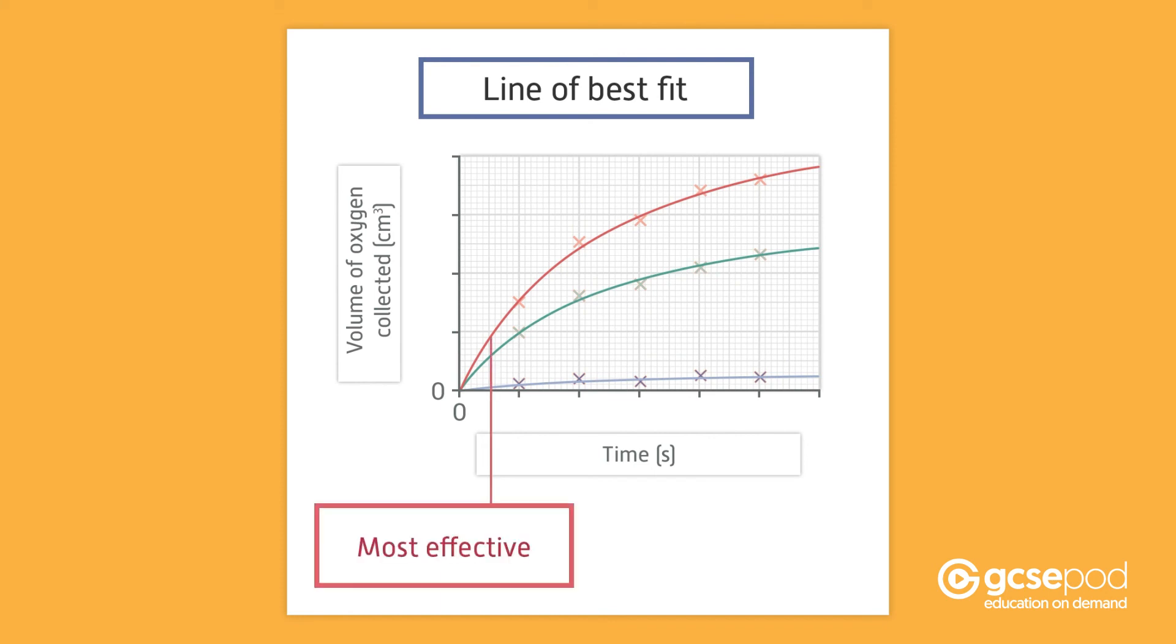From this graph, you can see that the most effective catalyst was manganese(IV) oxide. You can see this because the gradient of the line at the start of the reaction is the steepest. This shows that oxygen was produced at the fastest rate when this catalyst was used.